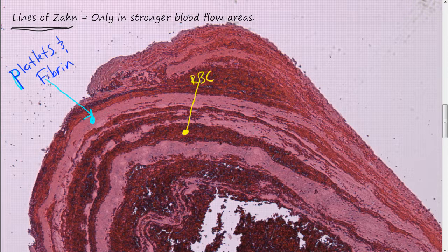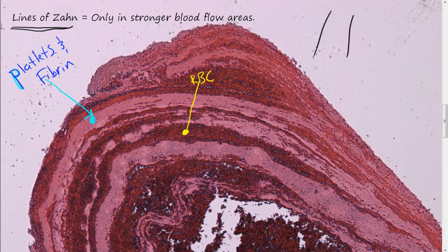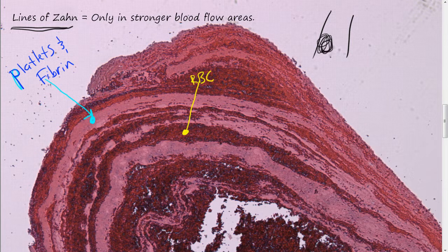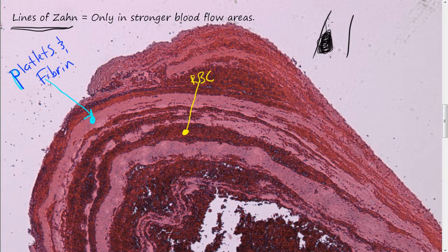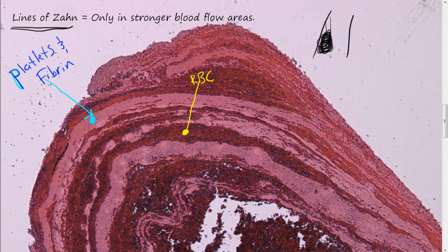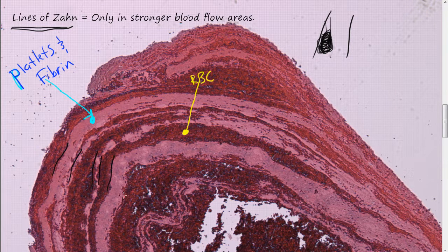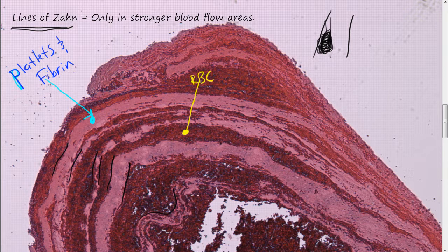In veins, if you have a vein here, there's just a blood clot. It's normally because the blood is moving so slowly that you don't really get these lines of Zahn, these different margins. And you can see here how these lines of Zahn are kind of distinct, different layers of platelets and blood cells.